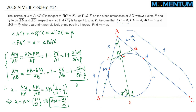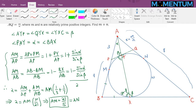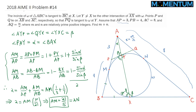Since AM equals 21/5, by equal tangents AN is also equal to 21/5. Now let's apply this same trick one more time — this time we're interested in applying the law of sines on triangles AQY and ACX.